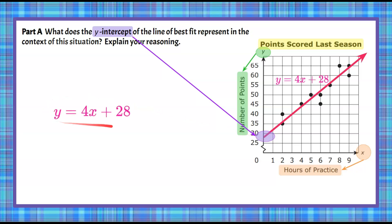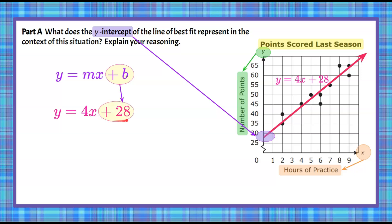Let's go back to what we were given. Our line of best fit equation is written in slope-intercept form, where M represents the slope and B represents the Y-intercept. Looking at our equation, we can see the Y-intercept is 28. So the point where the line crosses the Y-axis is the ordered pair (0, 28) — meaning when X is 0, Y is 28.